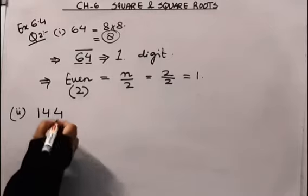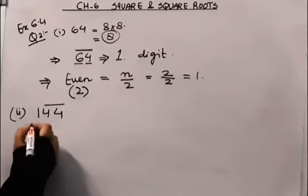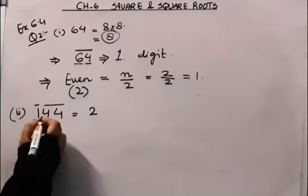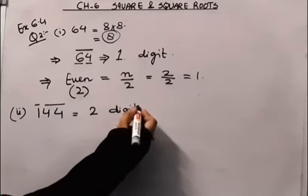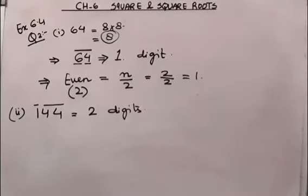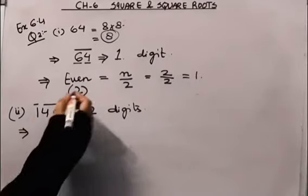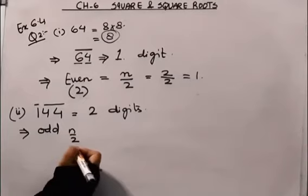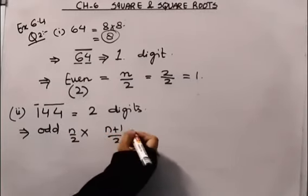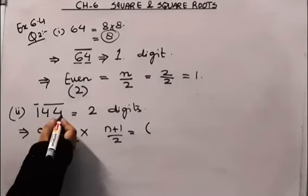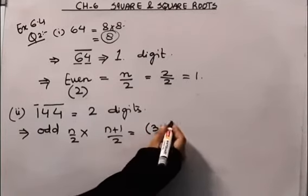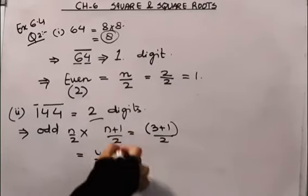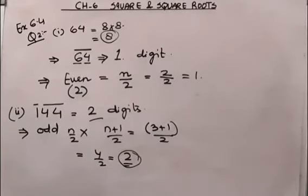Now the second example: 144. Using the bar method, 144 has two bars, so its square root will have two digits. Using the formula method, 144 has 3 digits which is odd, so we use (n+1)/2. That gives (3+1)/2 = 4/2 = 2 digits. Both methods agree.